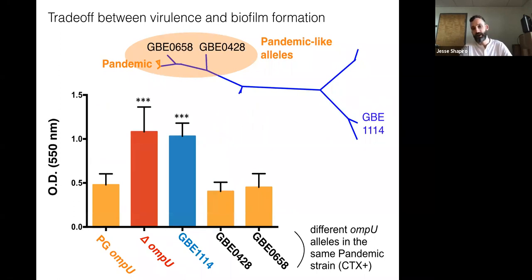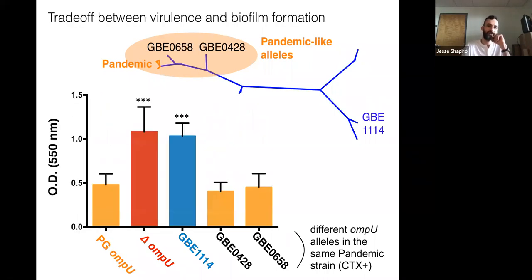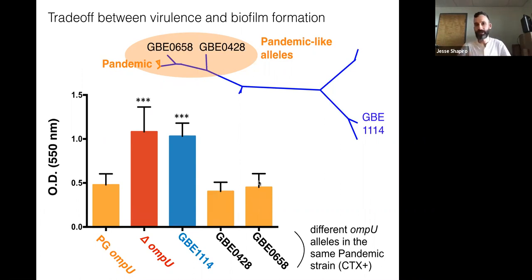This suggests OMP-U is a genuine virulence-adaptive polymorphism where the pandemic-like alleles behave basically like the pandemic version of this gene and allow Vibrio cholerae to colonize a mammalian host. There appears to be a trade-off: we also tested biofilm formation — a measure of the thickness of a biofilm formed by these different strains — and it shows the opposite. The OMP-U knockout forms really good biofilm; the environmental allele GBE114 also forms really good biofilm. But the pandemic or pandemic-like alleles form very little biofilm. It seems to be a trade-off: you're either good at virulence — host colonization — or good at biofilm formation.